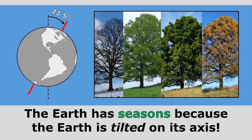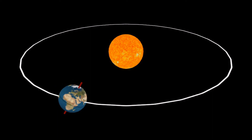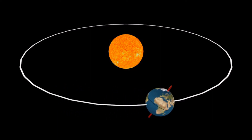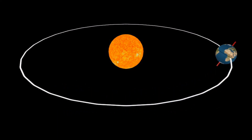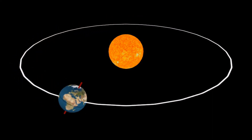The earth has seasons because the earth is tilted on its axis, as you can see in the diagram. The earth isn't spinning straight up and down — it's tilted. The part of the earth we live on goes from being tilted toward the sun to away from the sun and back. This change causes the seasons as the earth revolves around the sun.